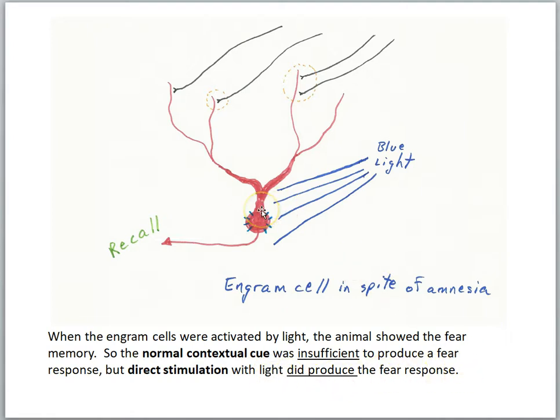So remember then, this starts to raise some questions about what do we mean by the engram. This cell was activated during training, but it didn't get the LTP here. So the normal cues can't reactivate it, but if we come along and activate it, we get recall of the fear memory.